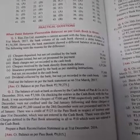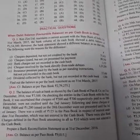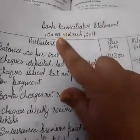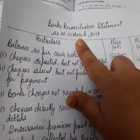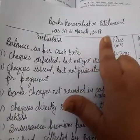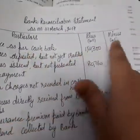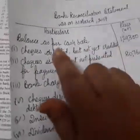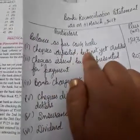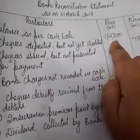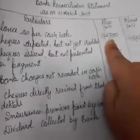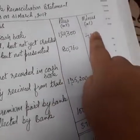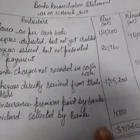The question has directly given us the debit balance of the cash book, so I will start with this balance. I have written 'Bank Reconciliation Statement' as on 31st March 2017, with particulars, plus, and minus columns. I have started with 'balance as per cash book.' Because this is a favorable balance, I have written it on the plus column. If it were a credit balance, I would show it on the minus side — it depends which balance is given in the question.